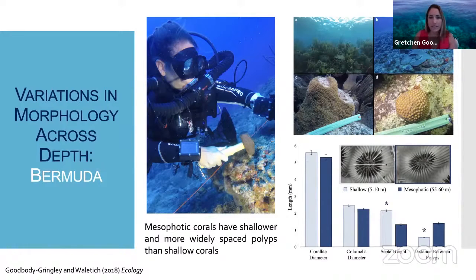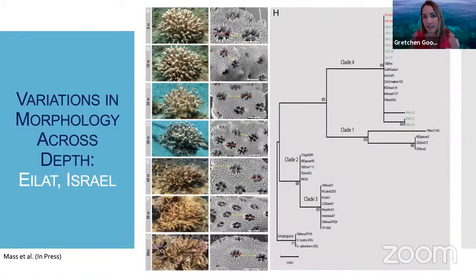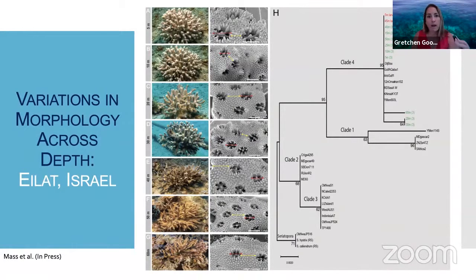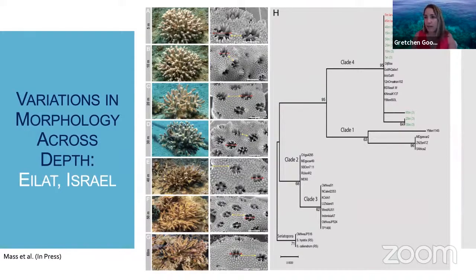Similarly in the Red Sea, and concurrently — before Dr. Mass and I even knew each other — she was doing a very similar study on Stylophora pistillata across the depth gradient in Eilat. Her images of Stylophora from 5 meters to 60 meters depth show visually that the morphology of these colonies is changing: more closely branched colonies in the shallows and more widely branched colonies at depth. Again, we believe this is an adaptation to light availability, where they are maximizing exposure to light and minimizing self-shading among branches.